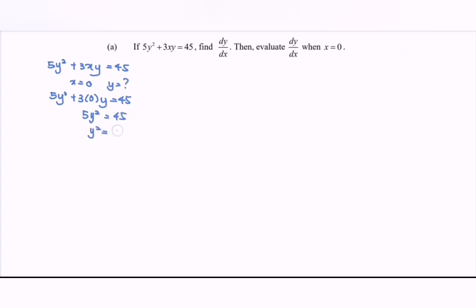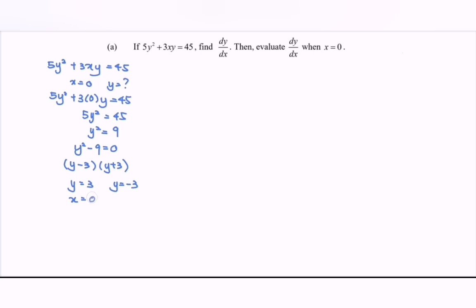So y squared is equal to 9, meaning y squared minus 9 equals 0. Factor out the situation: y minus 3 and y plus 3. So the value of y will be equal to 3, or y is equal to negative 3, when x is equal to 0.